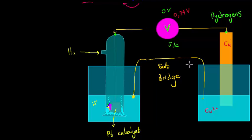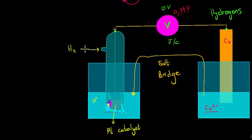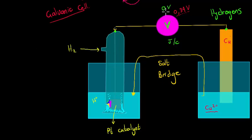From that table you can read each cation's ability to attract electrons. Copper 2+ has a standard reduction potential of 0.34 volts. Because it's a positive reading, it means copper has a bigger reduction potential than hydrogen. If copper and hydrogen are placed in a galvanic cell, the voltmeter reading would be 0.34 volts.